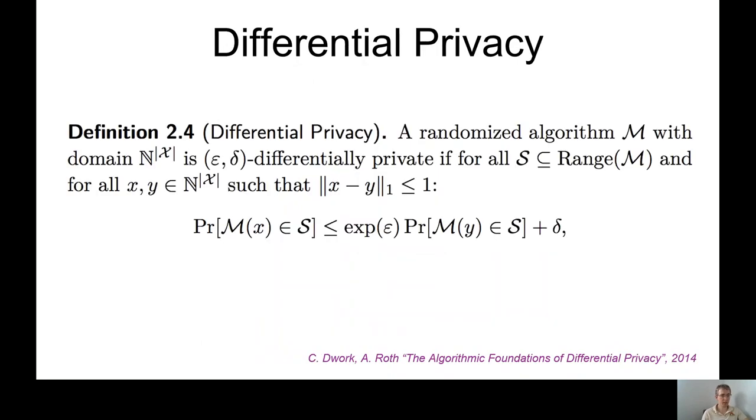So the type of privacy guarantee we are using in this work is differential privacy, and here on the slide you can see a definition of what is known as epsilon delta differential privacy. We use this definition because it works well with machine learning modeling which is our primary focus. It ensures that an attacker that gets access to the machine learning model trained under differential privacy cannot determine whether the data of a particular individual was used to train the model or not.